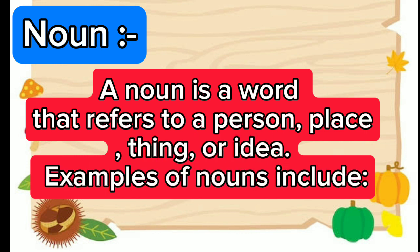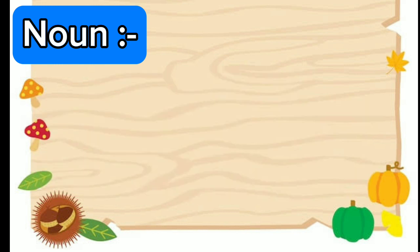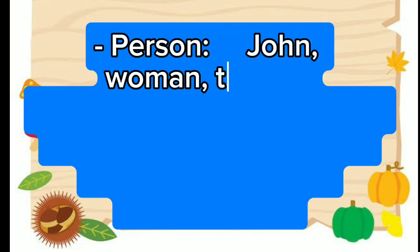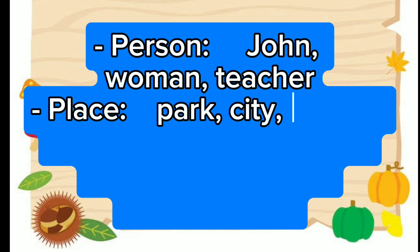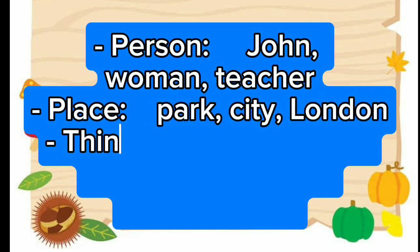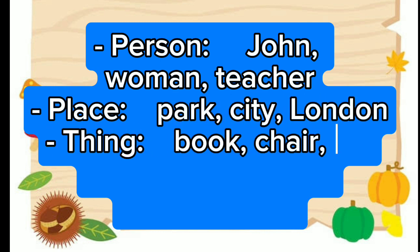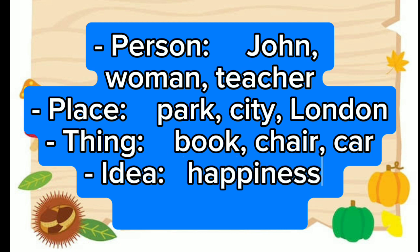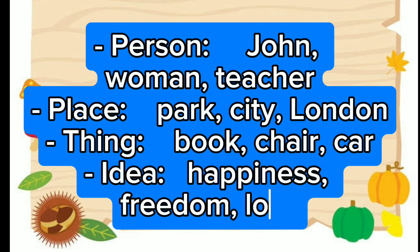Examples of nouns include: person — John, woman, teacher; place — park, city, London; thing — book, chair, car; idea — happiness, freedom, love.